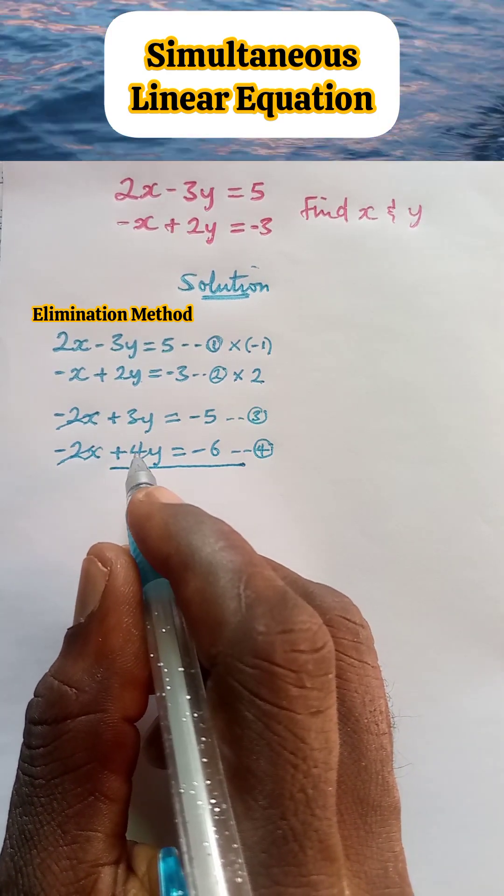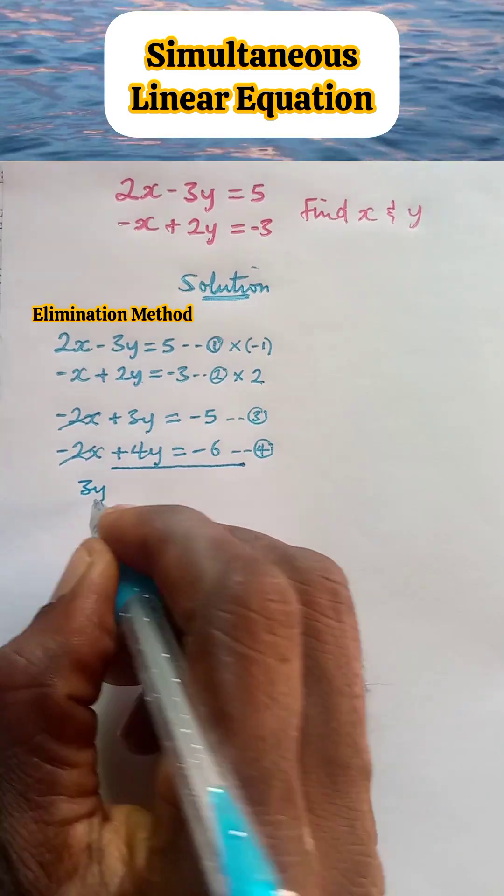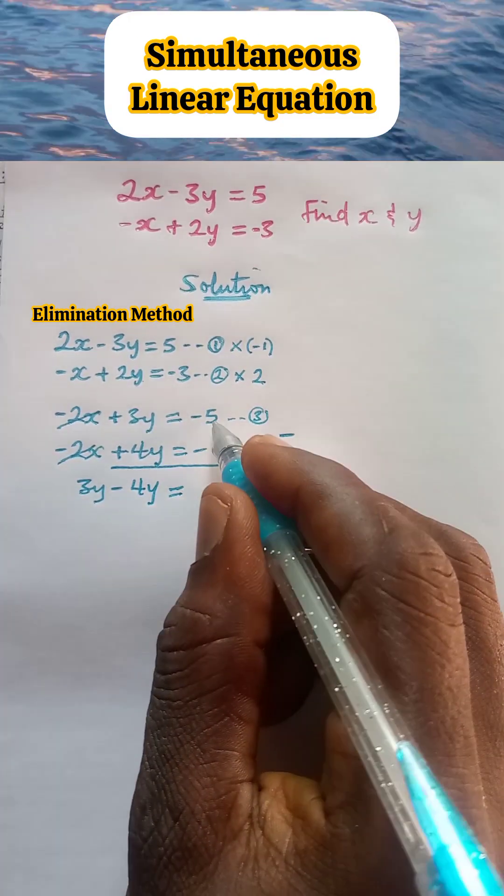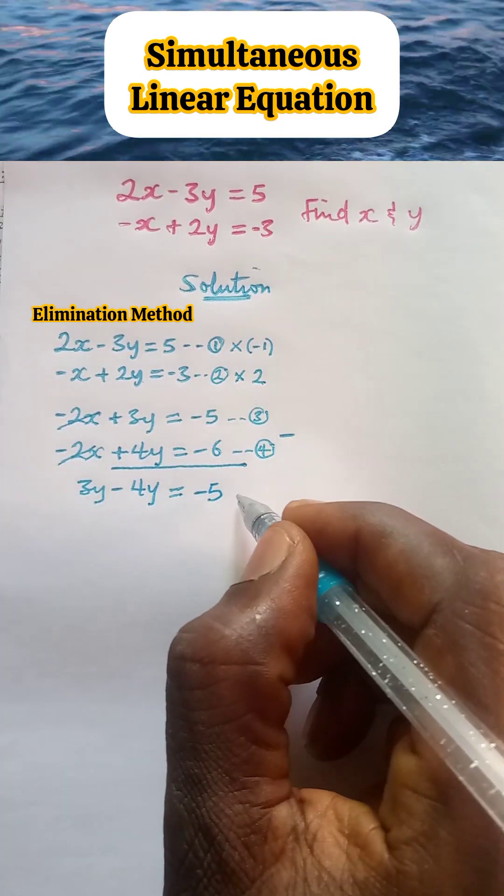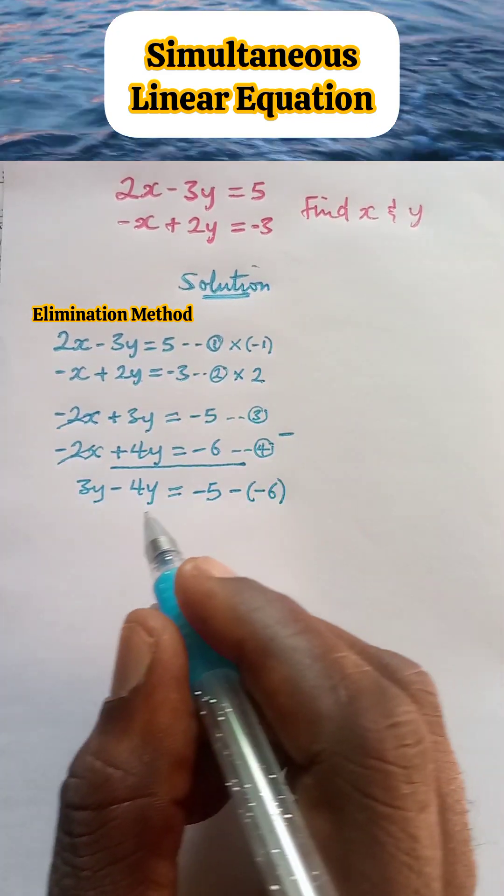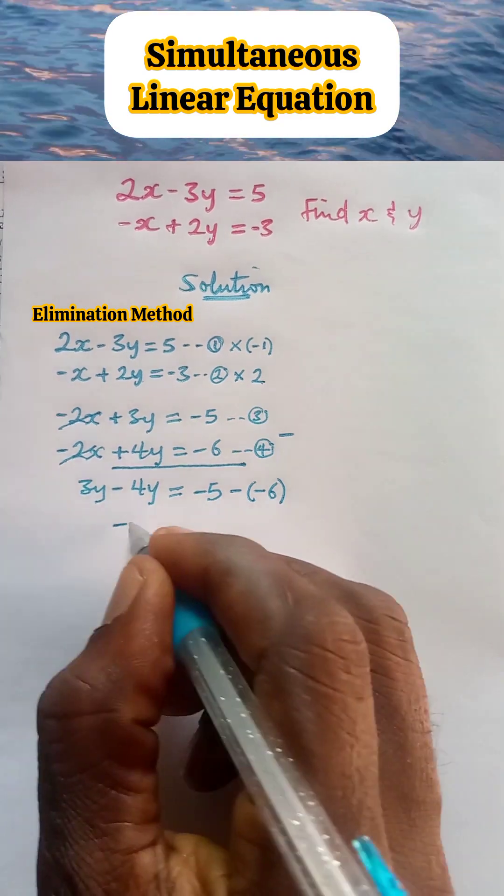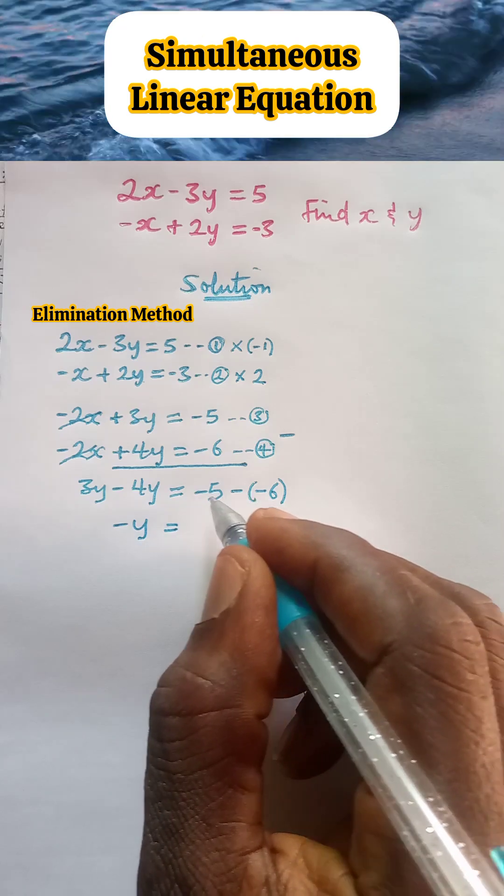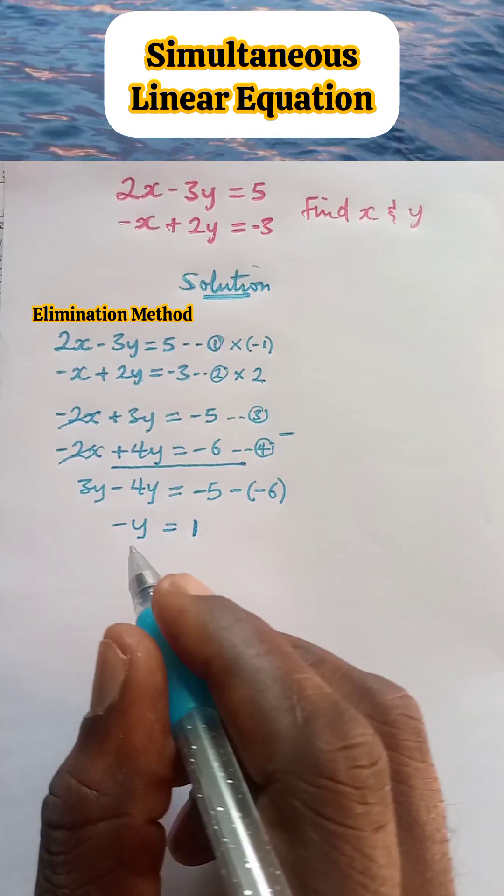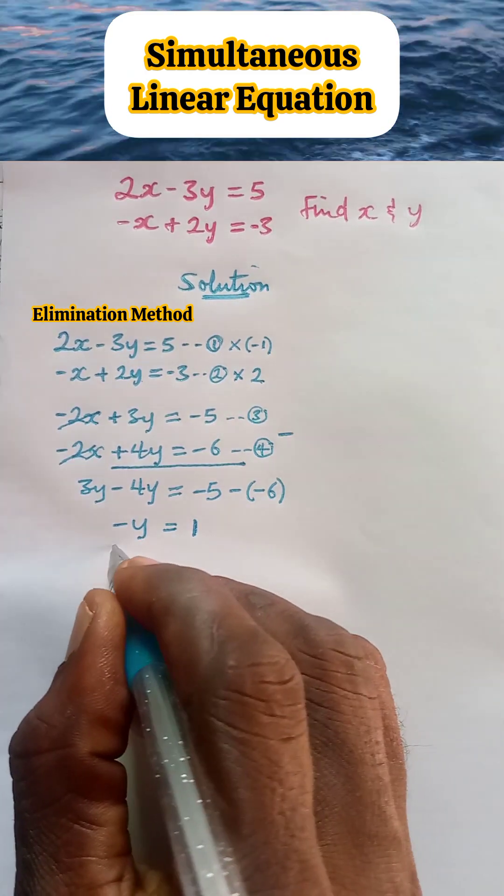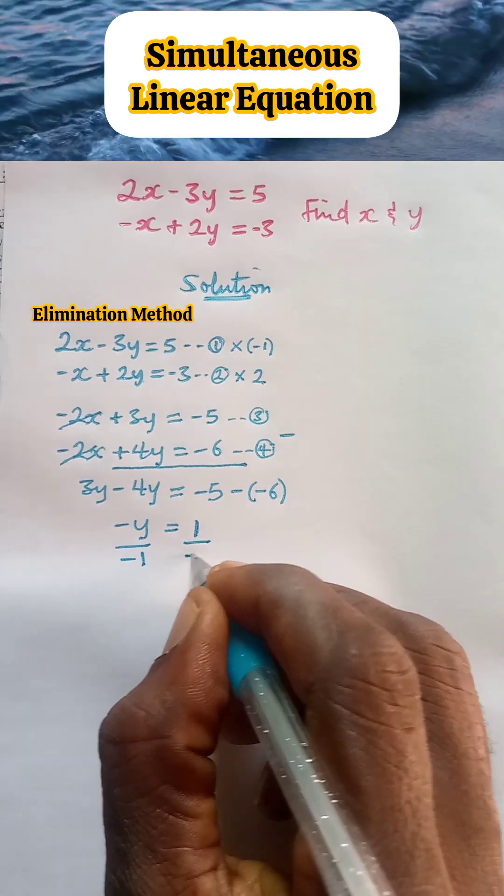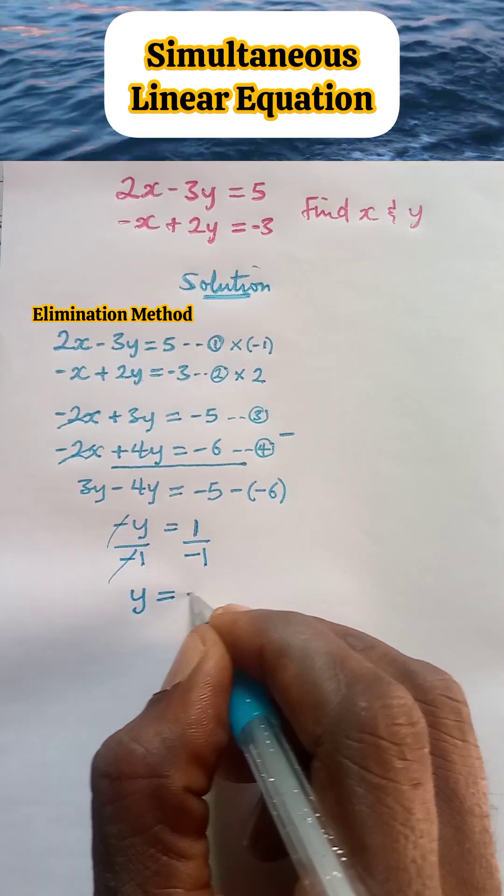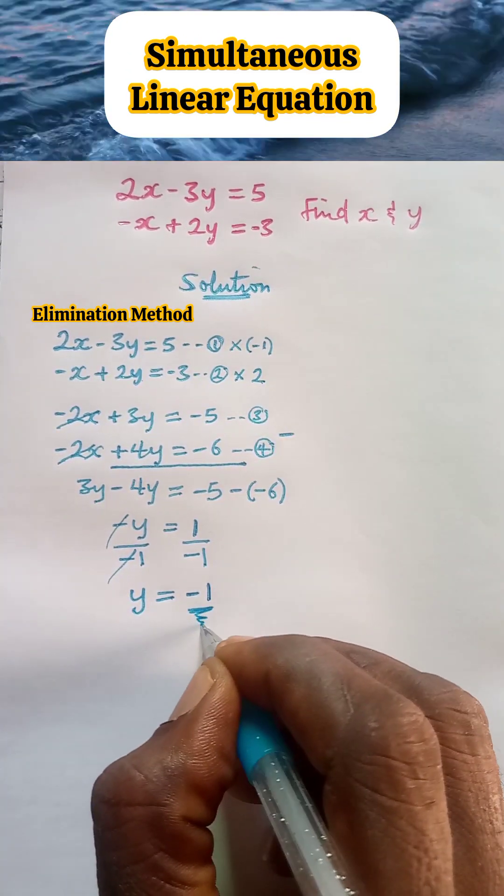We are going to subtract equation 4 from equation 3. So we have 3y minus 4y equal to minus 5 minus in brackets minus 6. Here, 3y minus 4y, we are left with minus y equal to minus 5. This minus multiplied by this minus gives us plus, so that minus 5 plus 6 is equal to 1. Now we are looking for y. So anything attached to y should go. So divide both sides by negative 1. This negative 1, we strike this and we are left with y divided by 1 is y equal to 1 divided by minus 1 is negative 1. And this becomes the value of y.